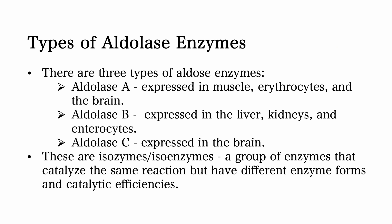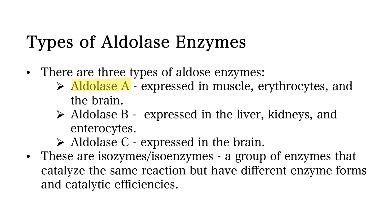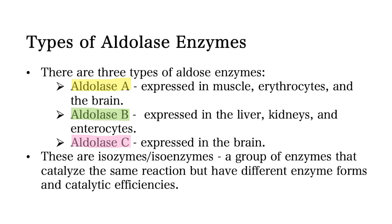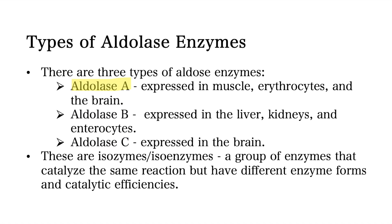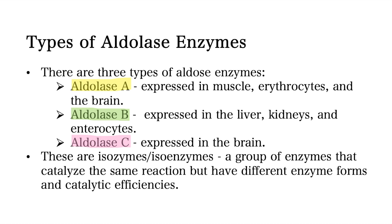There are three subclasses of aldolases: Aldolase A, aldolase B, and aldolase C. Aldolase A is expressed in muscles, erythrocytes, and the brain. Aldolase B is expressed in the liver, kidneys, and enterocytes. And finally, aldolase C is expressed in the brain.